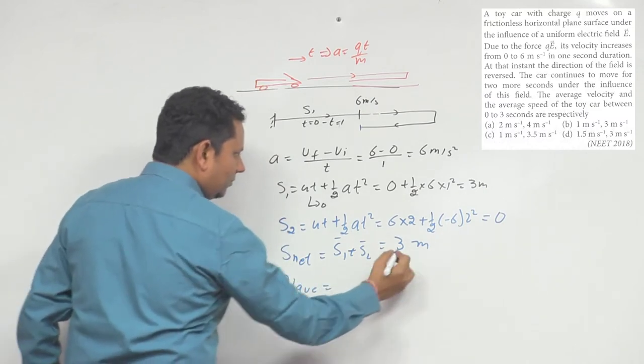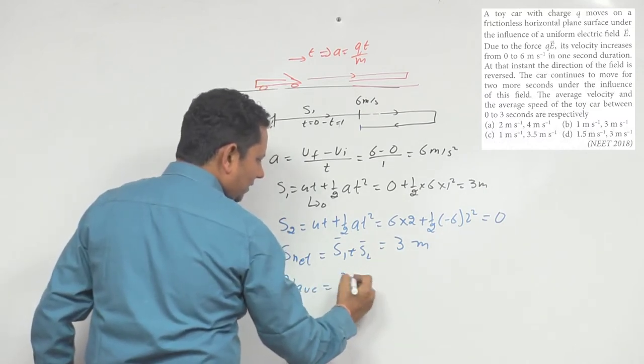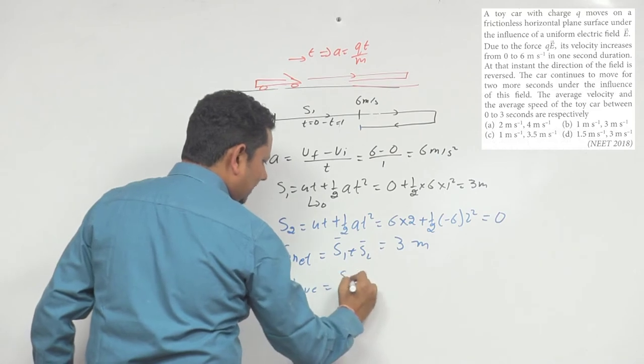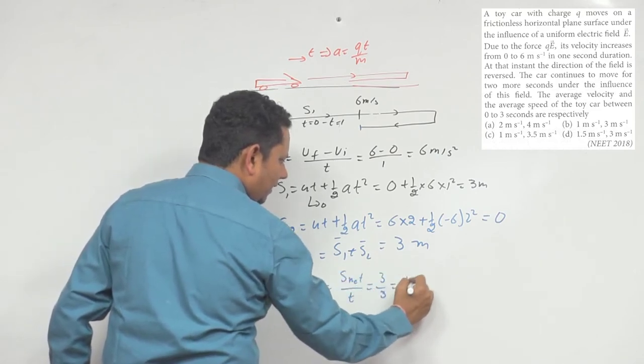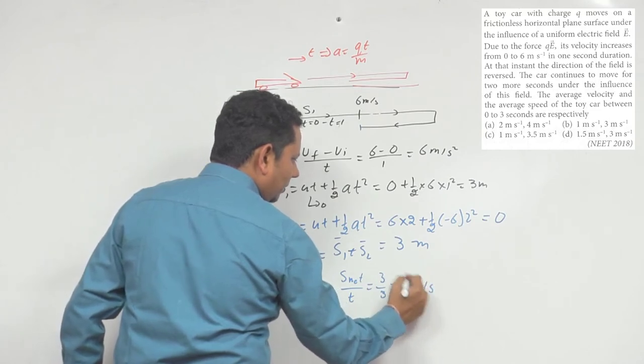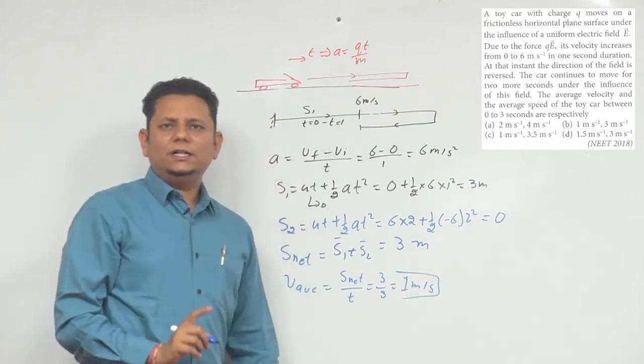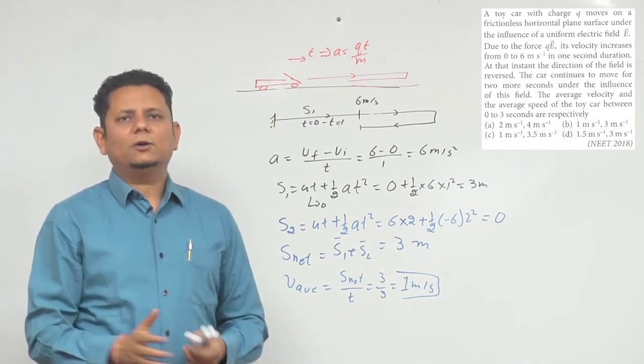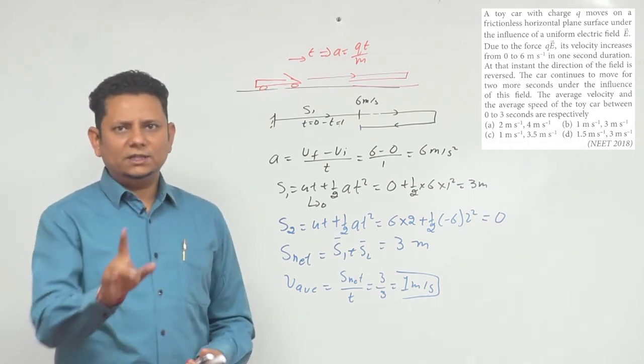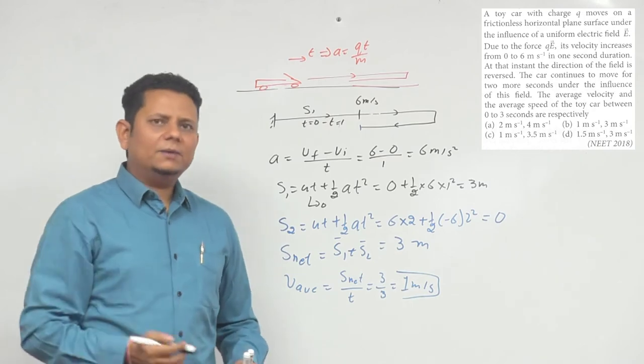Average velocity is displacement S net divided by time, which is 3 by 3 equals 1 meter per second. So average velocity is 1 meter per second.